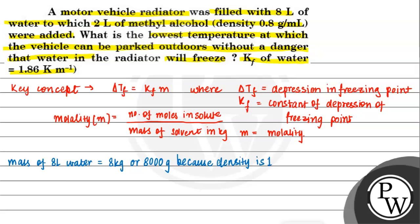Mass of alcohol added is density times volume. Density is 0.8, volume is 2 liters or 2000 ml. So it will be 1600 grams.